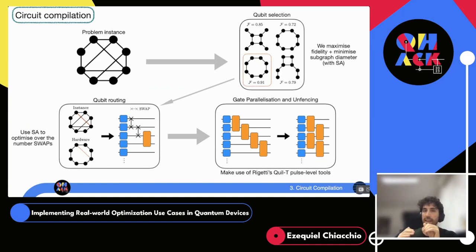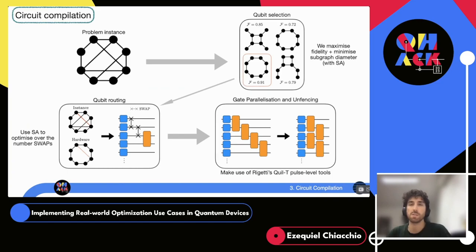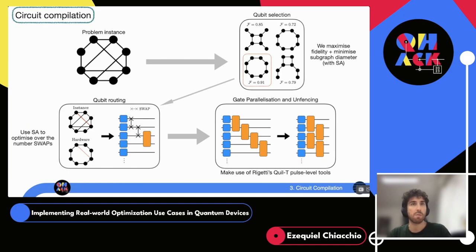To optimize the number of SWAPs we implemented another simulated annealing procedure. We also parallelize the circuit as much as possible accounting for commutation rules. Using Rigetti's low-level tools, we completely unfence the circuit and parallelize as much as possible, paying the price of some crosstalk noise but minimizing the overall circuit depth — which is really the most important part here.